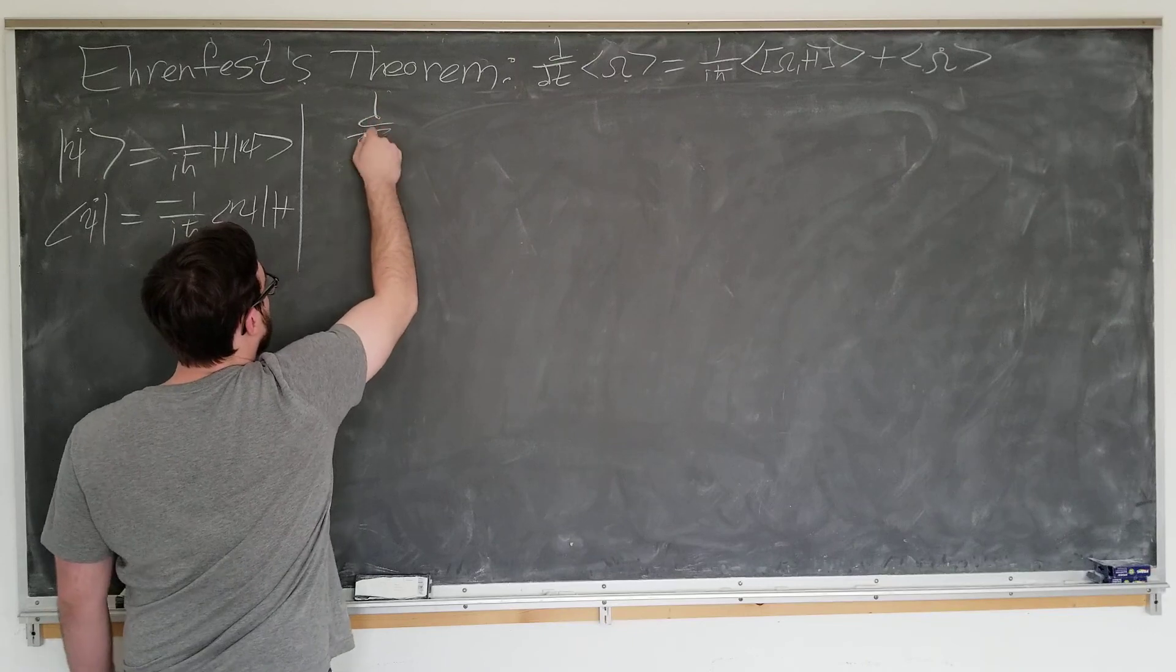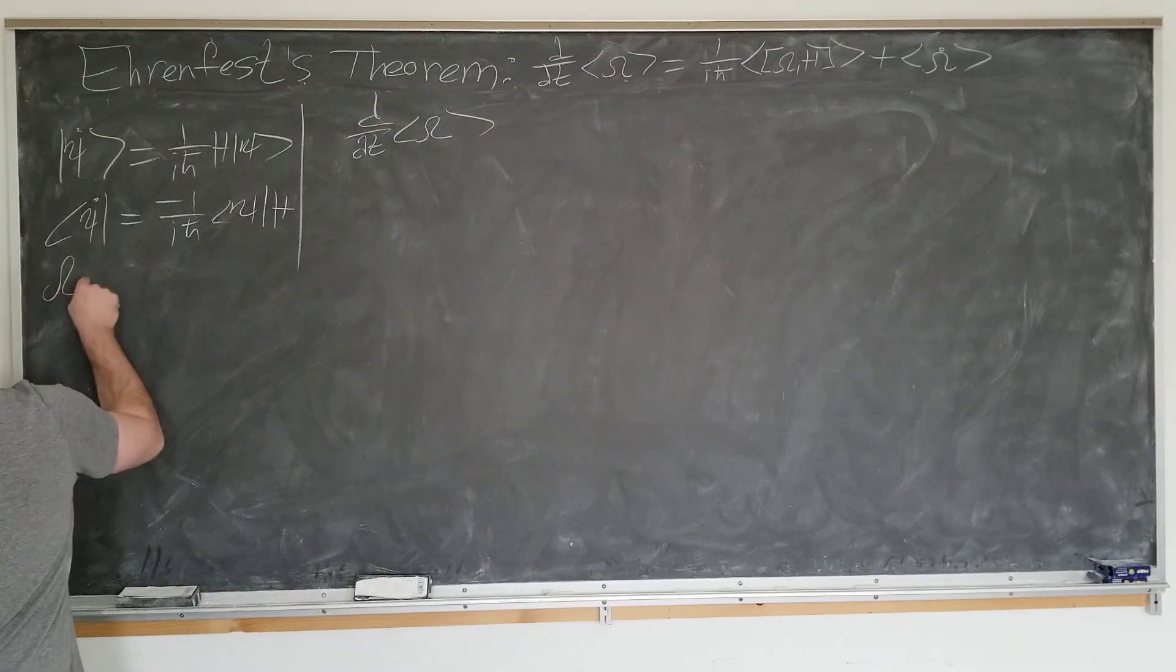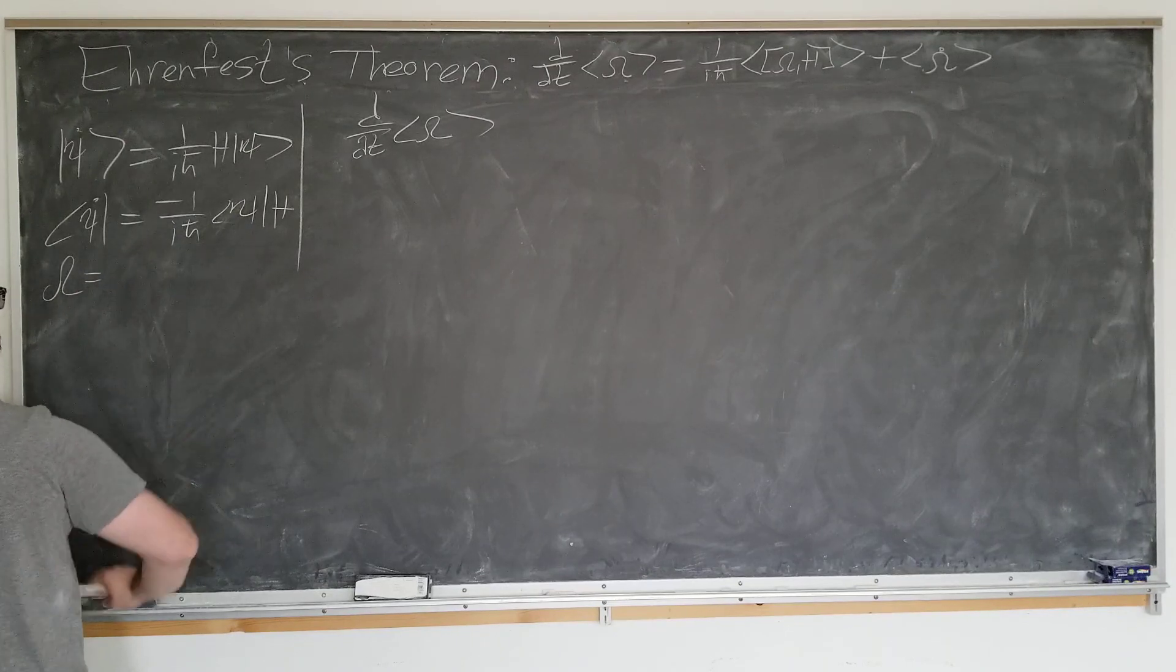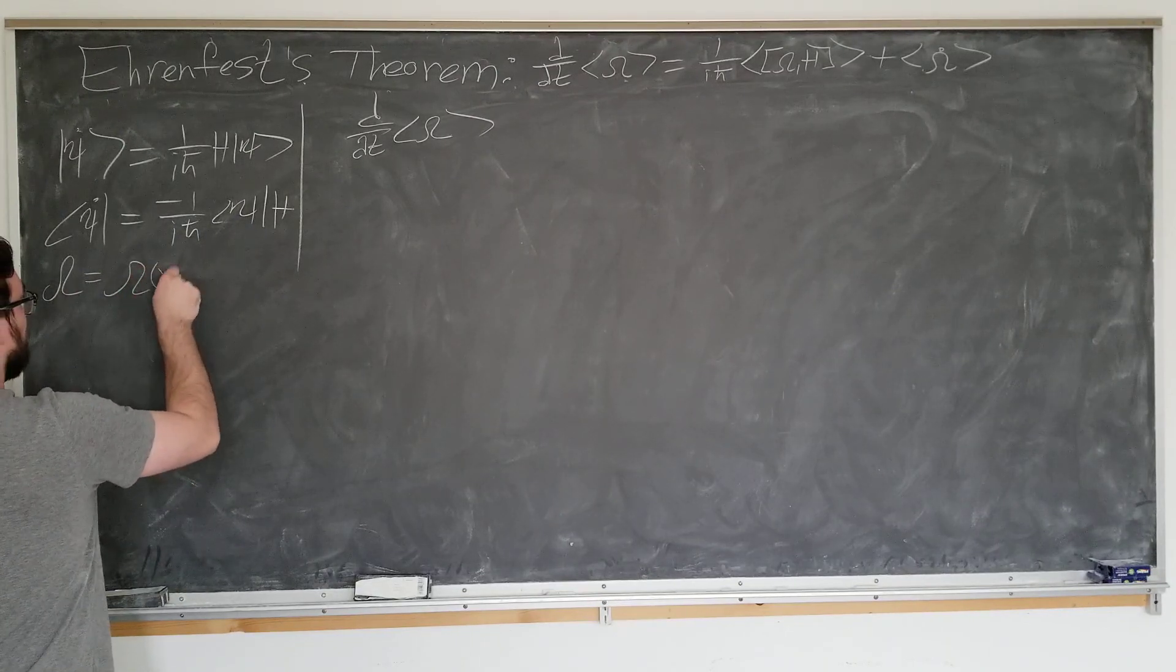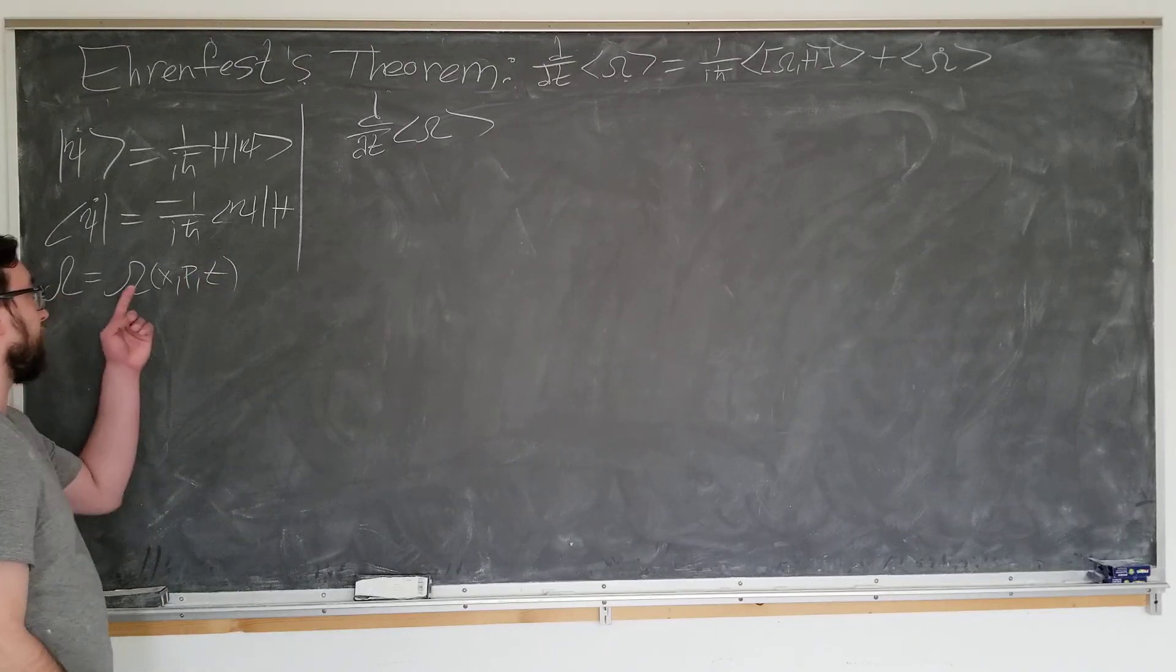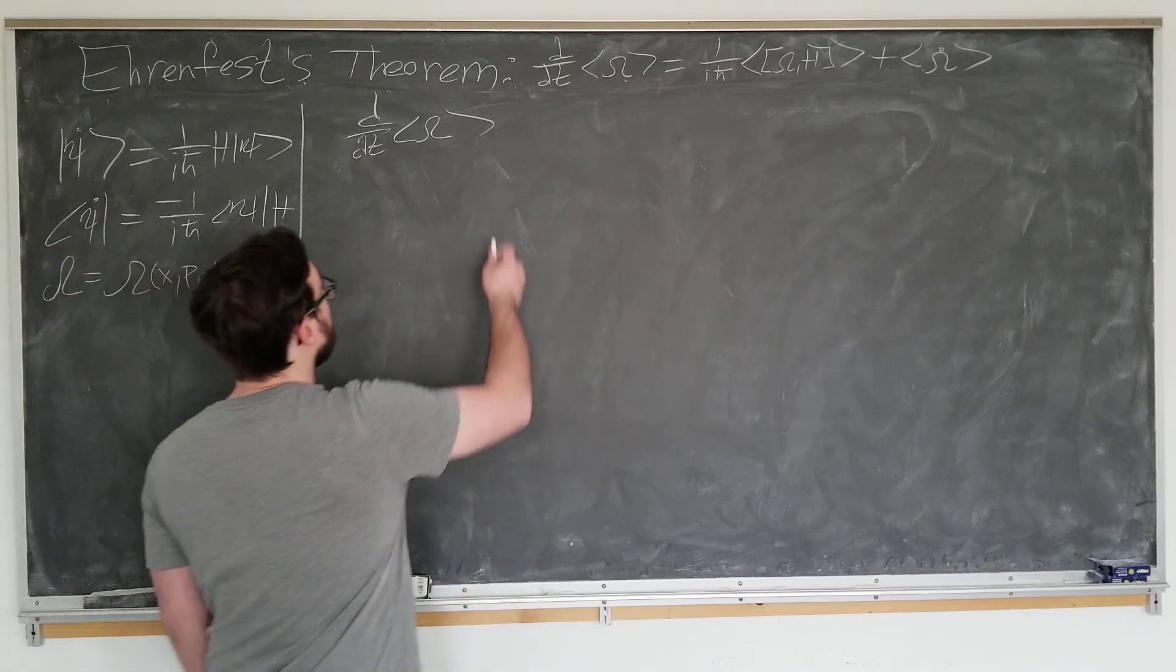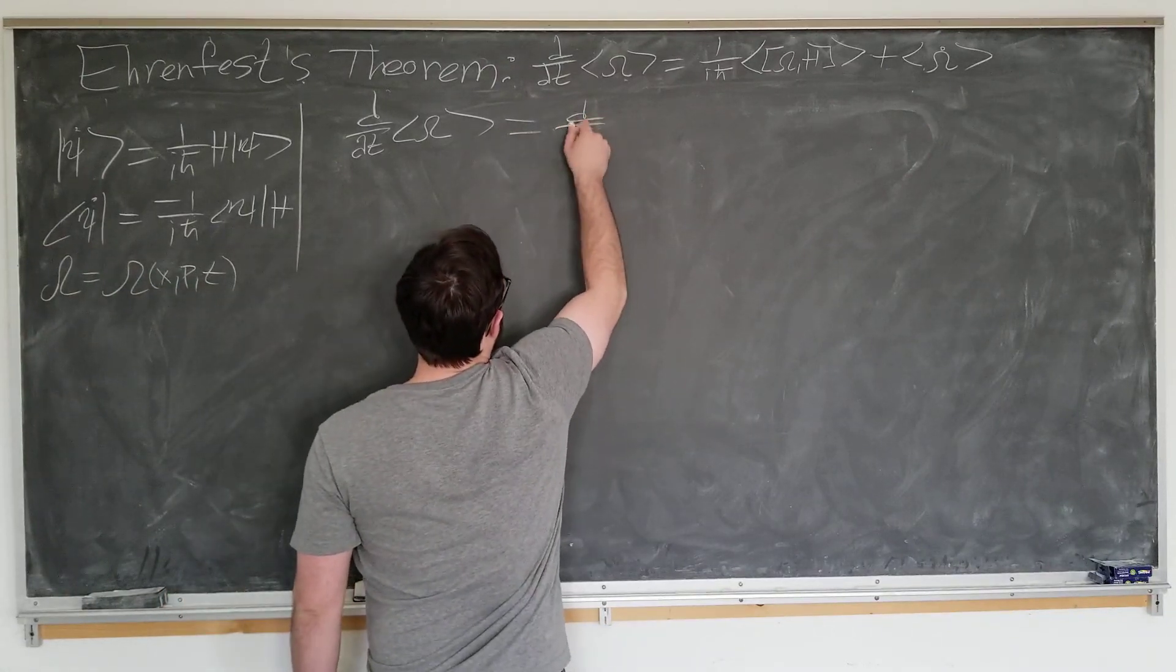Let's take the time derivative of the expectation value of operator omega. Note, omega is a function of position, momentum, and time, all three independent variables. If x is secretly a function of time, it does not matter in this context. In a certain state psi.